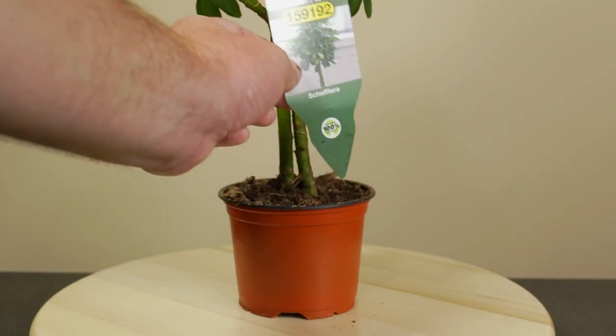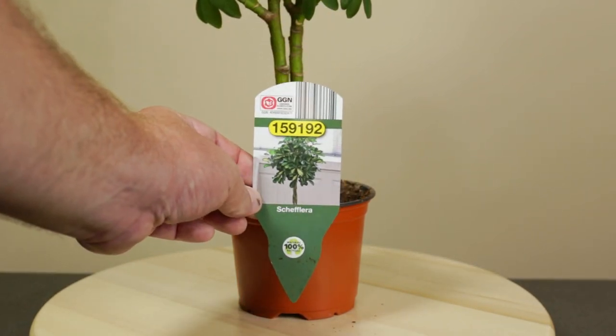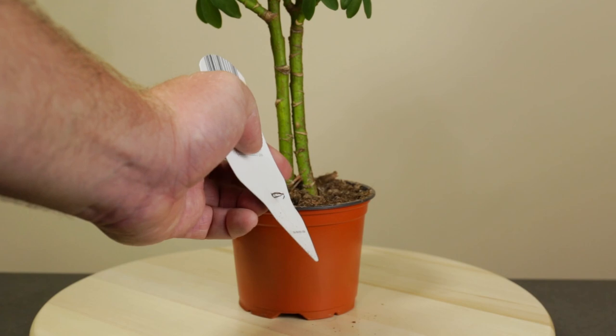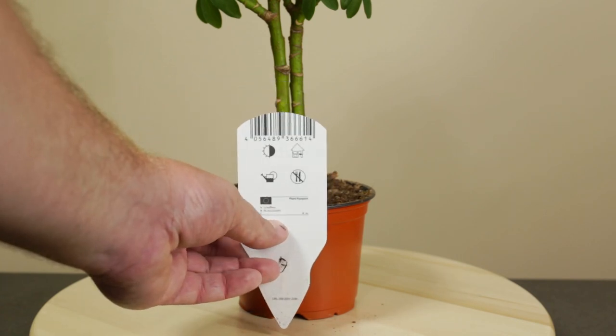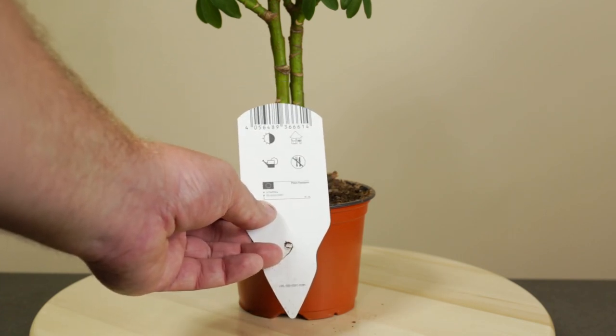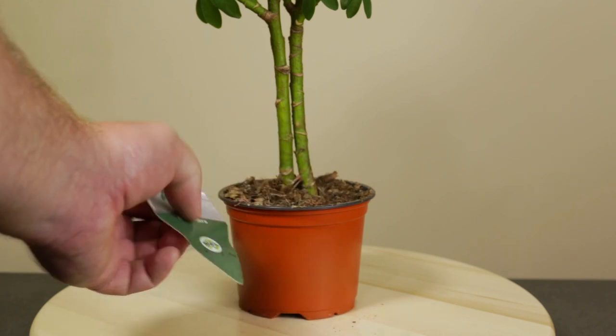Like with most store-bought plants, the label doesn't help much in correctly identifying the species. Fortunately, in this case it's clear this is not the full-size umbrella tree, which is a distinct species called Schefflera actinophila, which has much larger leaves.